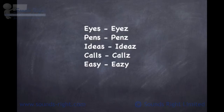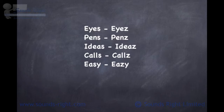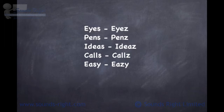If you're addressing a group of people in an audience and you're not mic'd up, consider the unvoiced S sound. In large spaces where your voice has to carry, we need to replace the unvoiced S sound with a voiced Z. So, for example: eyes become eyes, pens become pens, ideas become ideas, calls become calls, easy becomes easy, and so on.